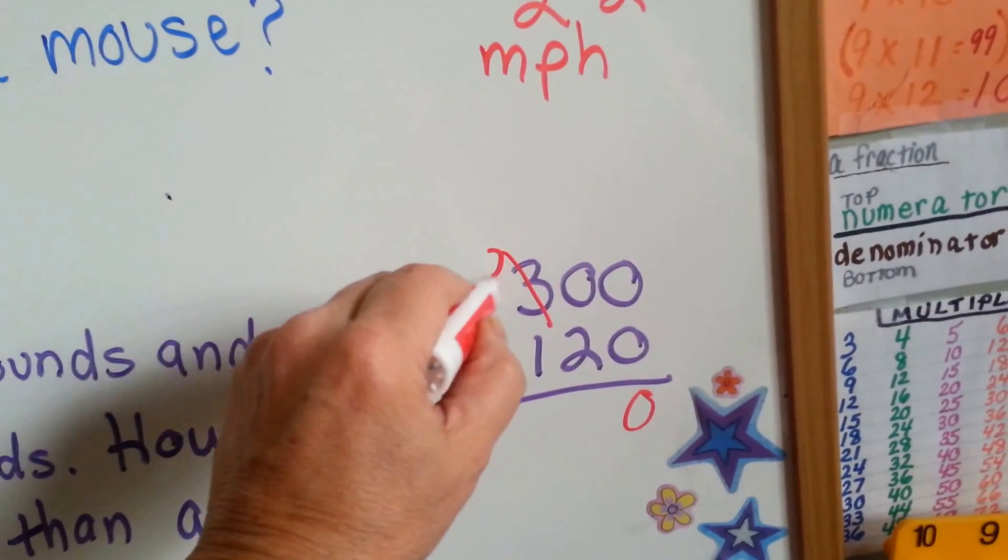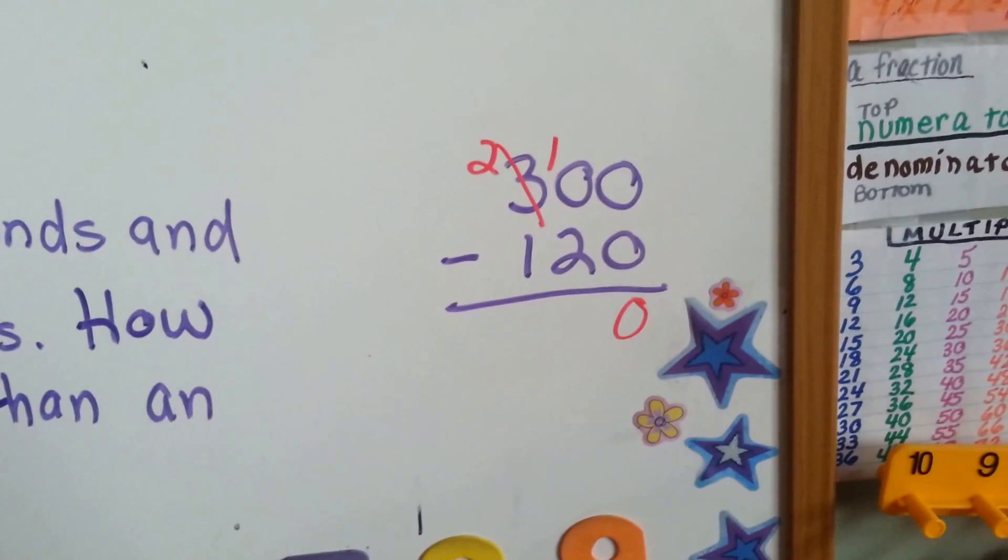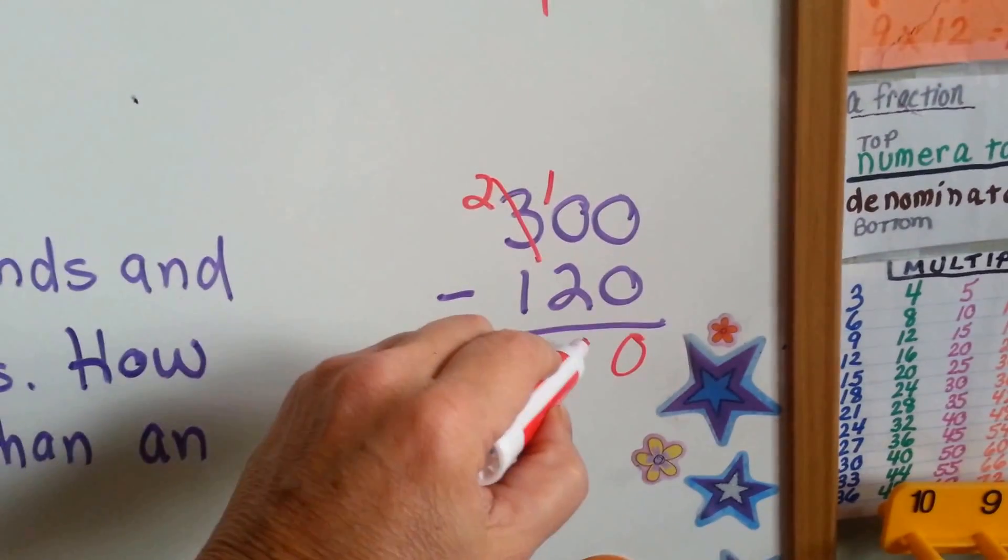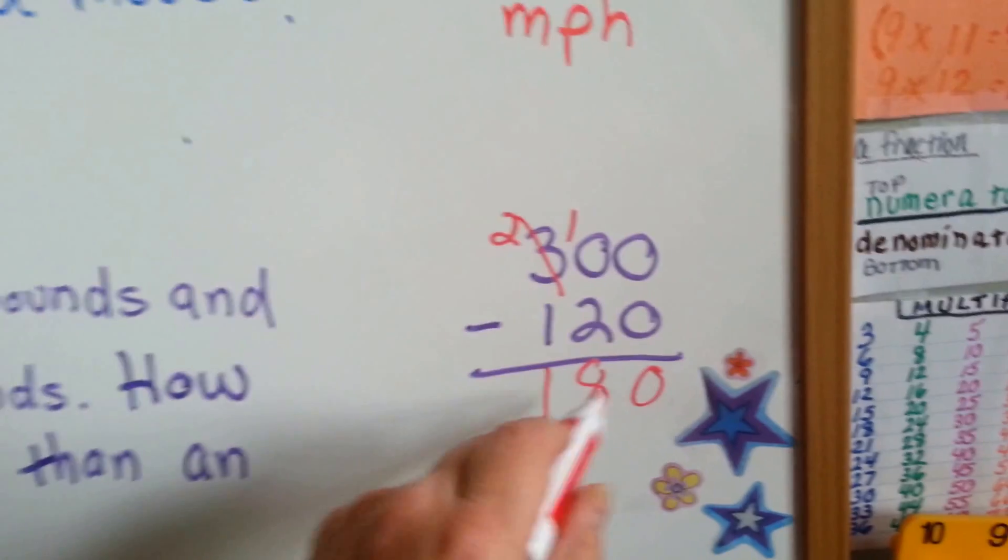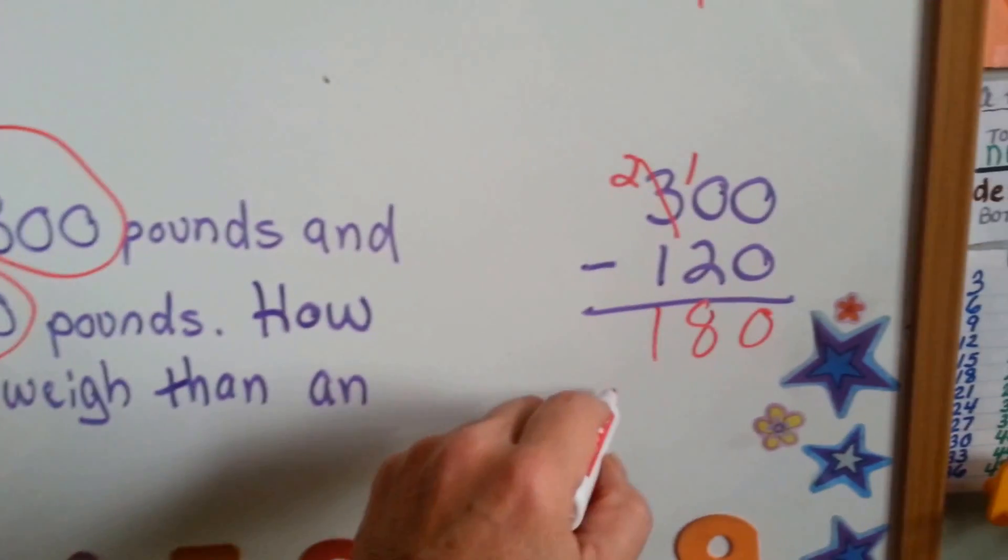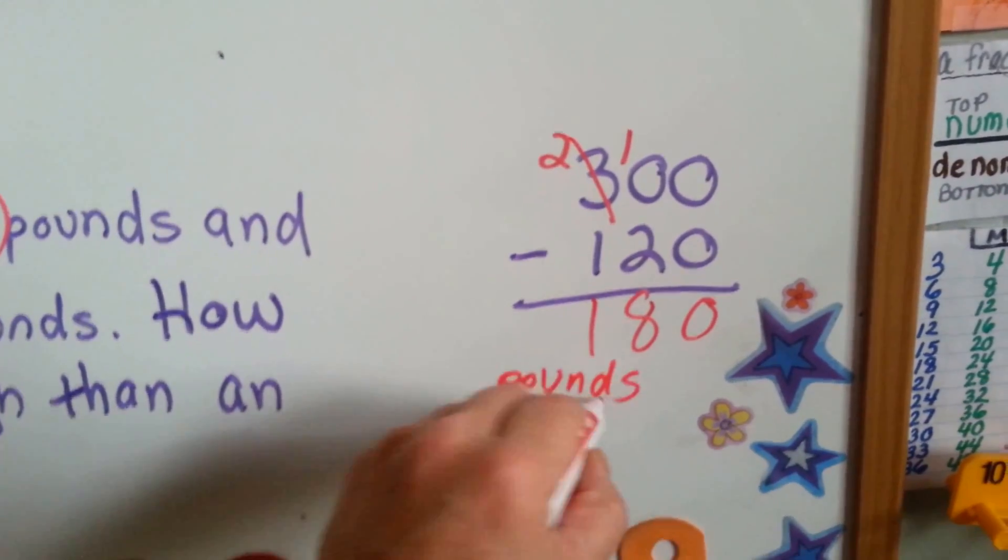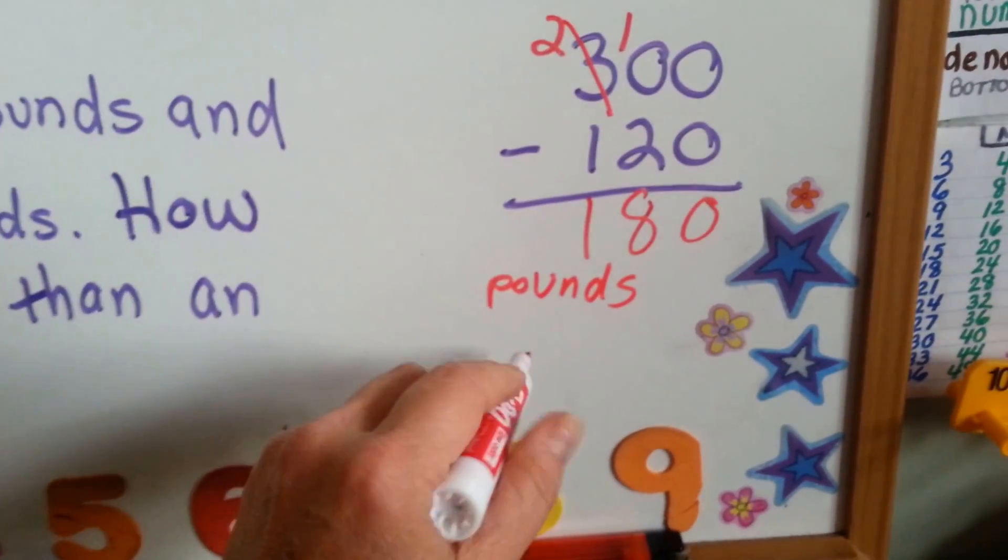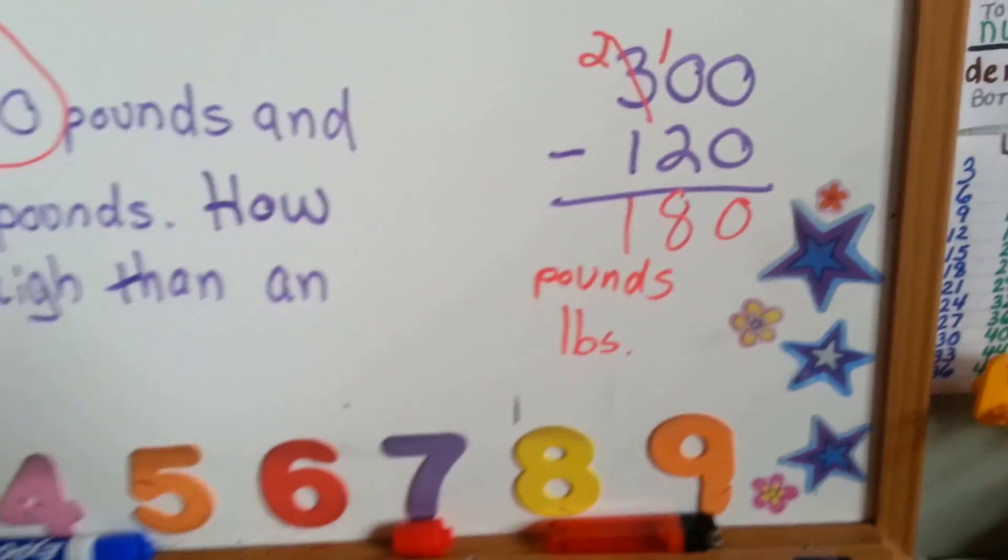So, the 3 is going to become a 2. That one's going to become a 10. 10 take away 2 is 8. And 2 take away 1 is 1. 180 what? 180 pounds. You can either write pounds or the abbreviation for pounds here in the USA is LBS period.